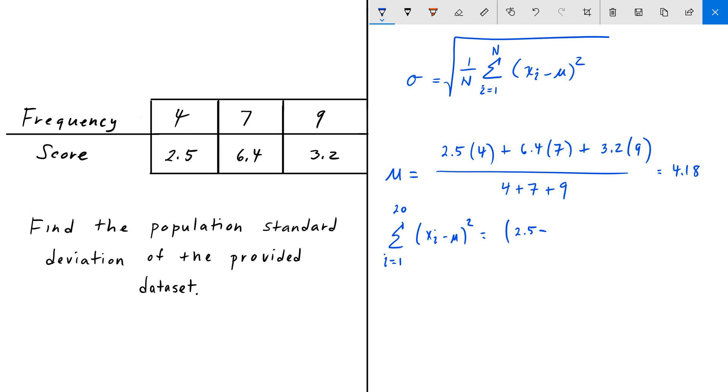Subtract the mean from it, 4.18, and square it. That score appears four times so we multiply it by 4. Then we do the same for the second term: it appears seven times, so we get 6.4 minus the mean 4.18 squared.